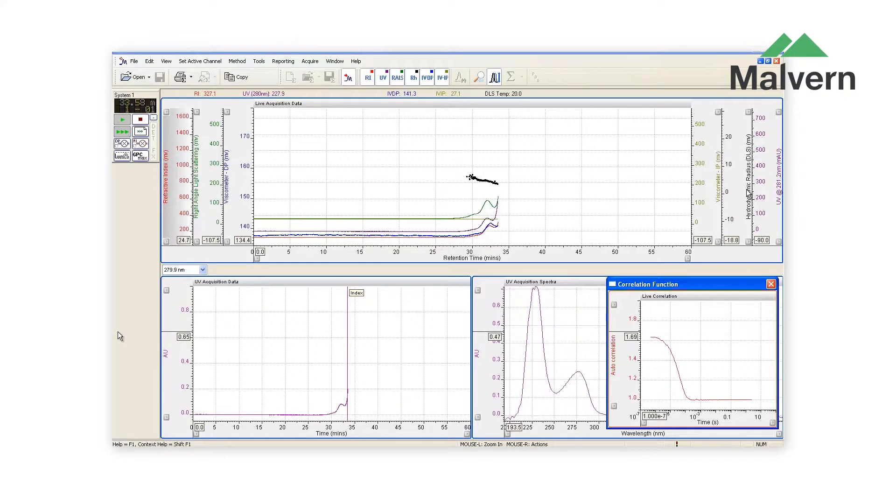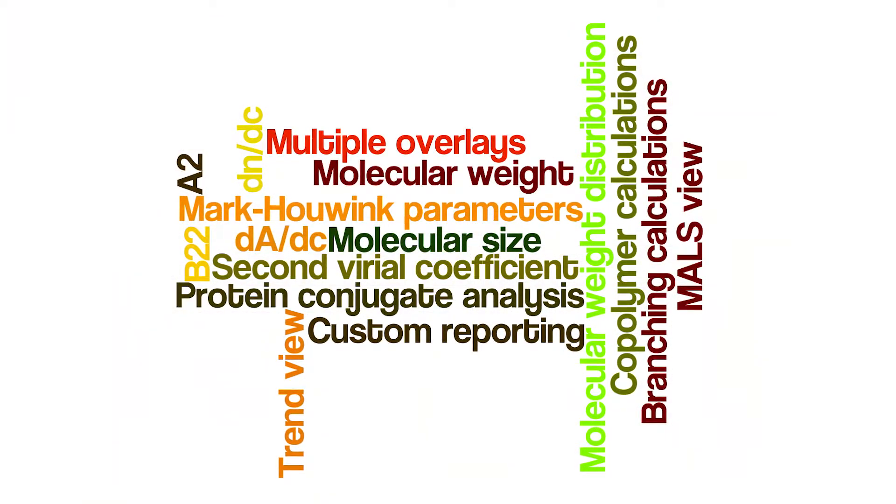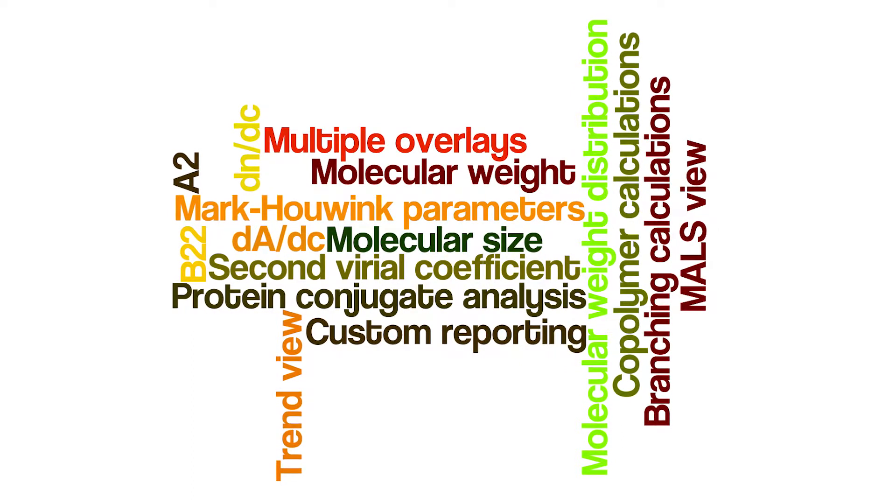Advanced detection requires advanced software and OmniSEC is simply the smartest tool available for both polymer and protein applications. With a modern and clear user interface, OmniSEC can acquire data from advanced detectors and your existing detectors. It allows the very highest levels of analysis and reporting even on complex datasets.